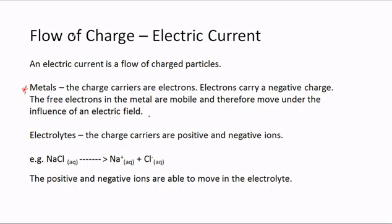An electrolyte is a solution containing ions, where the charge carriers are positive and negative ions that are able to move. For example, when sodium chloride is dissolved in water, we produce sodium ions (Na+) and chloride ions (Cl-). Because these particles are charged and able to move in solution, the electrolyte is able to conduct an electric current.